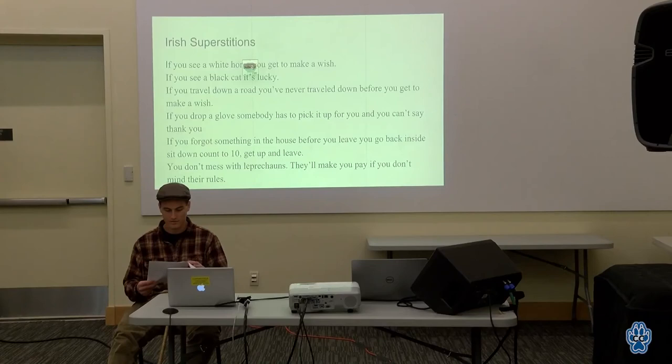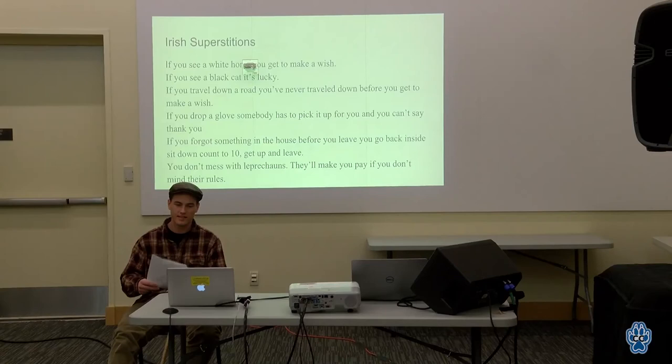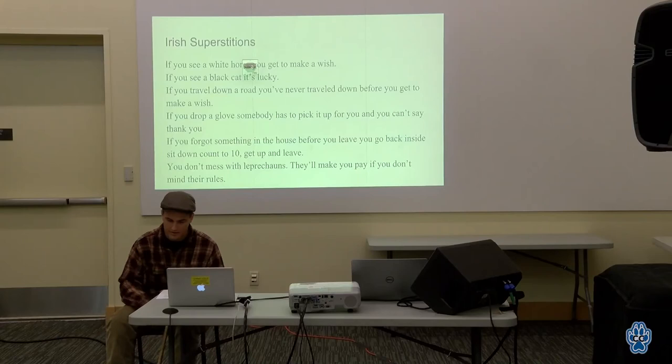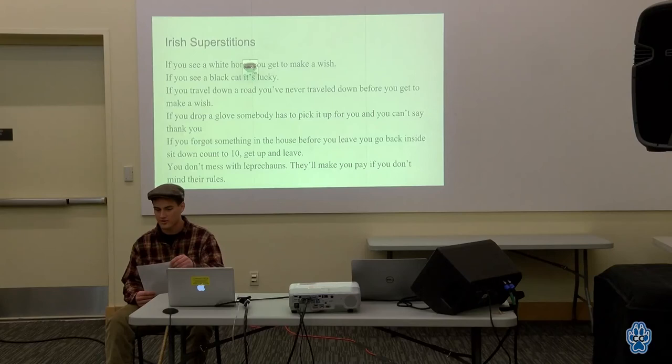One example of a story that is evidence of superstitious values: one superstition is you can't put one shoe on and tie it before you put the other shoe on. You have to put both shoes on first, then tie one and tie the other. The reason why they all do that is because of a story called Sean's Curse.